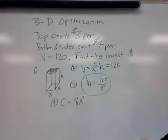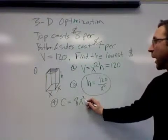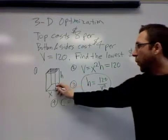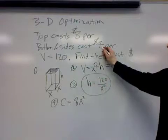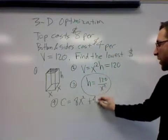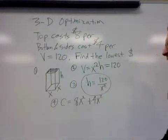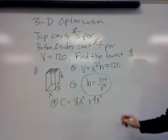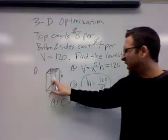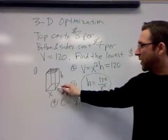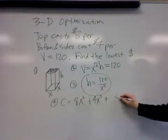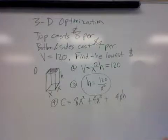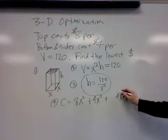The cost of building the top would be eight times x squared. Now for the bottom, the cost of building the bottom would be four dollars times the amount of material that the bottom is, which is x squared. So we've got four x squared.